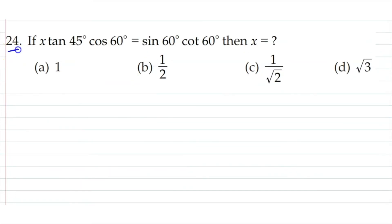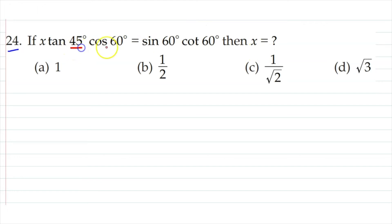Question 24: x·tan 45°·cos 60° equals sin 60°·cos 45°. We need to find x. This is a simple question — we substitute values for tan 45°, cos 60°, sin 60°, and cos 45°. Keep x as it is.